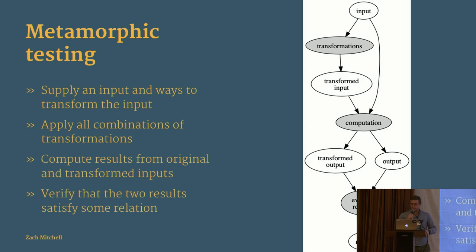Metamorphic testing works like this: you start with an input you provide, plus a set of transformations that will modify that input. You compute every possible combination of those transformations applied to your input, getting a new input for each combination. You compute an output for the original and every transformed input, and enforce that some relation holds between those outputs.